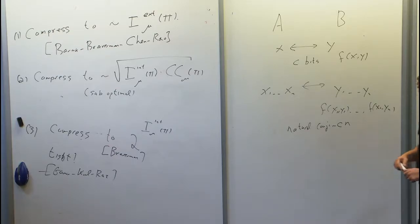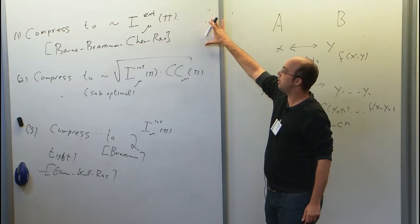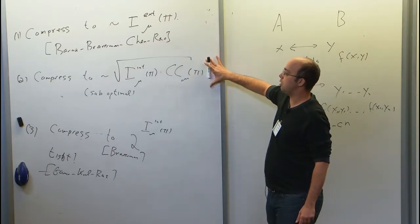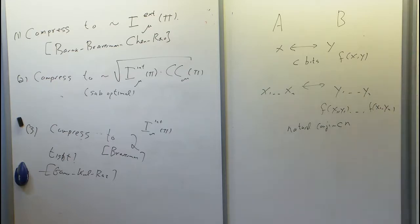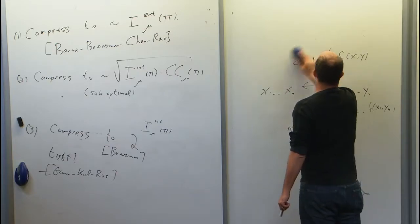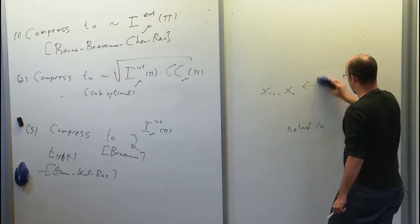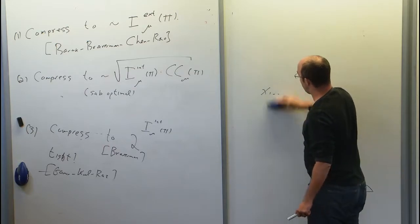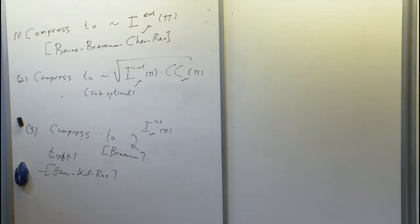I'll describe the results on compressing to external information and to the internal information bound — that's all I have time for. A useful approach is to ask: what is a protocol and how does it behave, and can we simulate it? Jacob defined the notion of a protocol tree in the first talk, and we'll use that notion here.